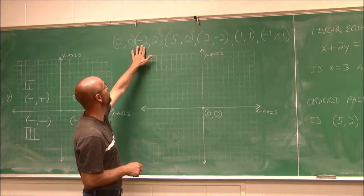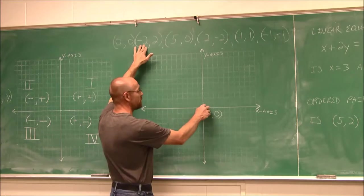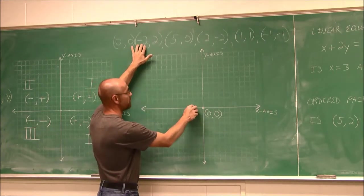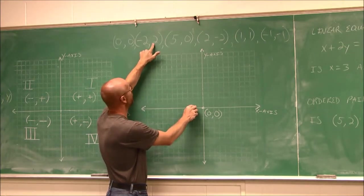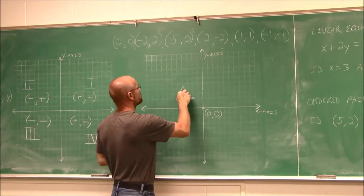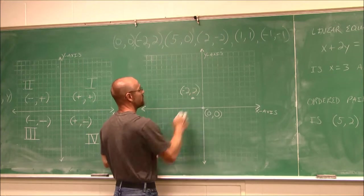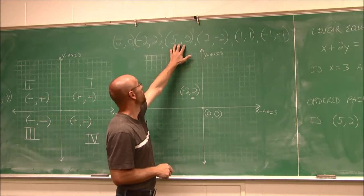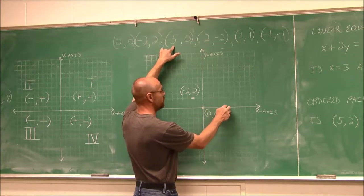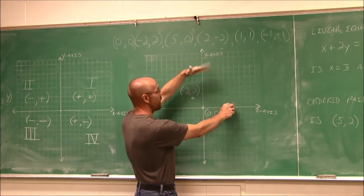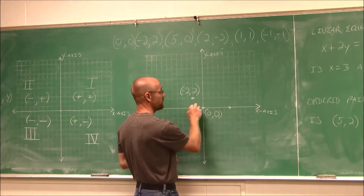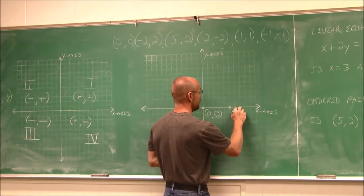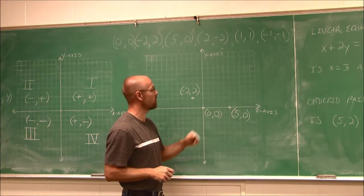Let's plot the point (−2, 2). My x value is −2, so I go to the left 2 spots, then y is 2, so I go up 2. I plot and label this point (−2, 2). Next, the point (5, 0): x is 5, so I go to the right 5 spaces, and y is 0, meaning I don't go up or down — I stay right on the x-axis at the 0 value. I label that point (5, 0).